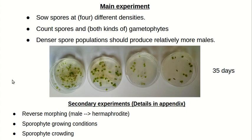The experimental procedure is to do the sowing and growing, and then to do a lot of counting. You have to count spores, count both male and hermaphroditic gametophytes, and then do the math. The methods are described in the appendix of this presentation, which you can download if you wish. I'm going to jump directly to the analysis of the data.